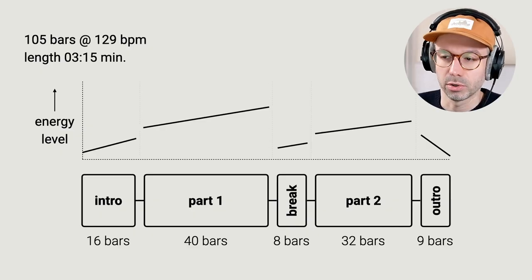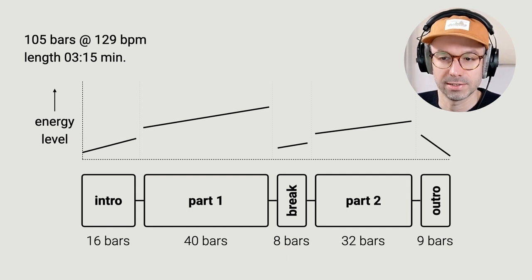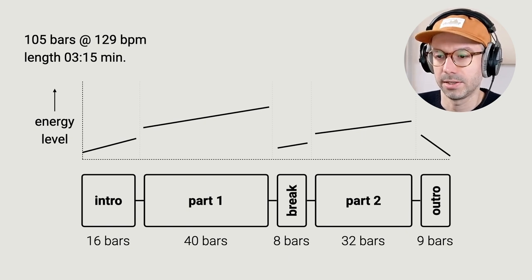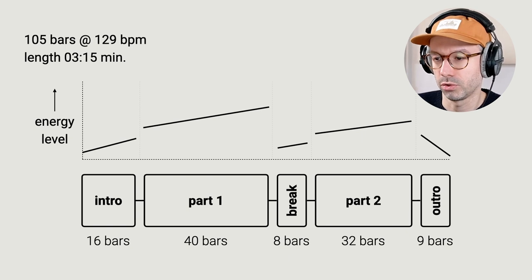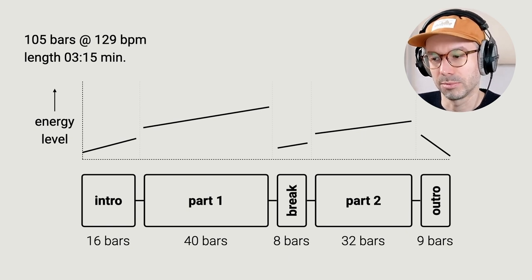For this video I picked a track from my latest album — Cut and Paste number 10, called Germaness. It's based around a sample from an old German record; link in the description to both my version and the original. I created a diagram to explain how this track is built: an intro of 16 bars, part one of 40 bars, a break of 8 bars, part two of 32 bars, and an outro of 8 plus one bars.